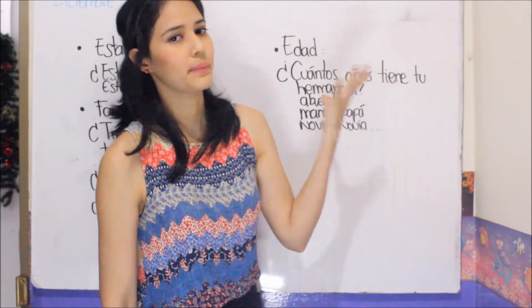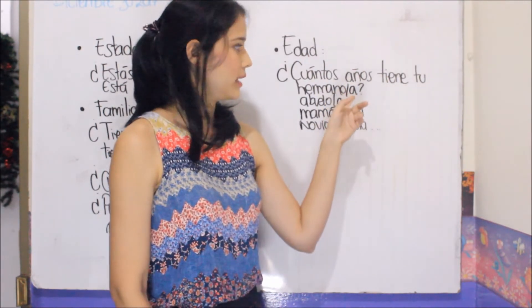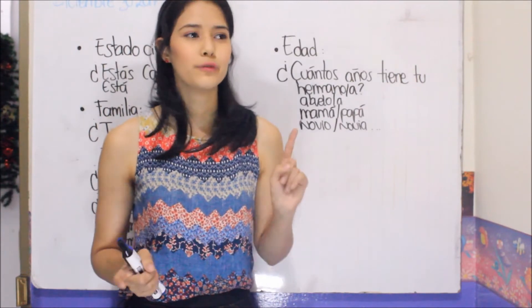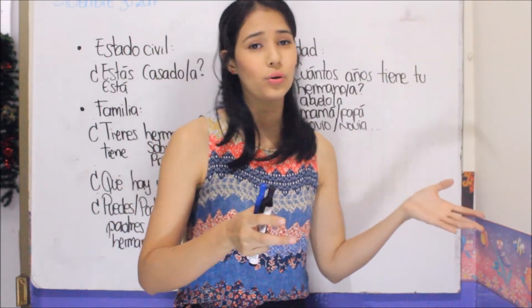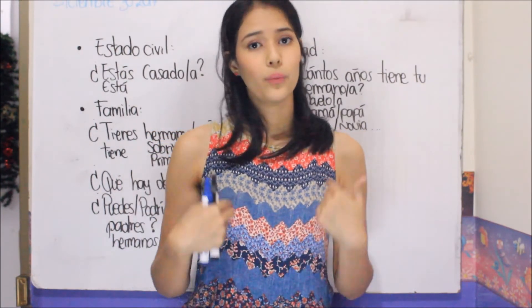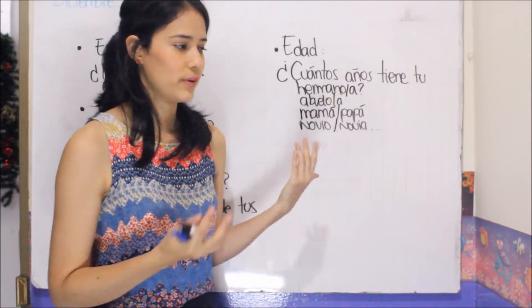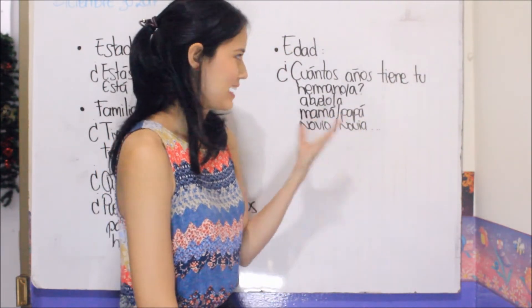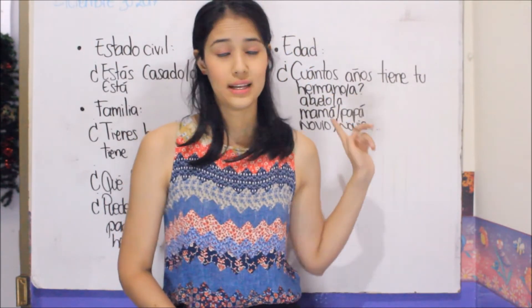Finally, to ask about someone's age: '¿Cuántos años tiene tu hermana?' A key difference between Spanish and English is that in English we use the verb 'to be' to express age, while in Spanish we use 'tener'. That is why many people from Latin America make the mistake of saying 'I have 20 years old' in English, because in Spanish we say 'yo tengo 21 años'. In English you must say 'I am 21 years old'. So: '¿Cuántos años tiene tu hermano?', '¿Cuántos años tienes tú?', '¿Cuántos años tiene tu novio / tu novia?' — you can change the person you are asking about.